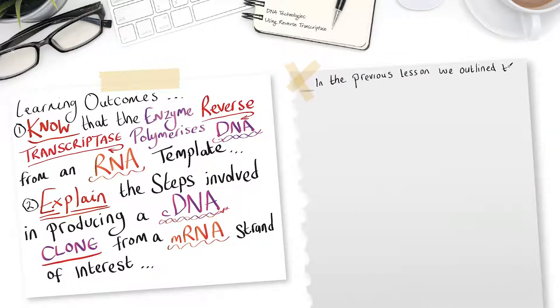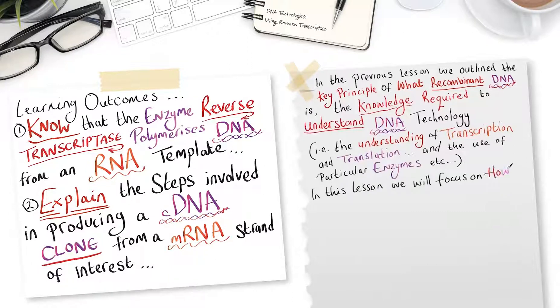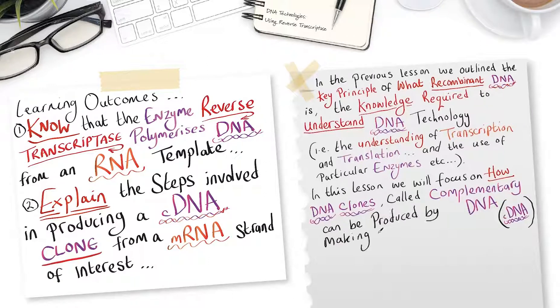In the previous lesson, we outlined the key principle of what recombinant DNA is, the knowledge required to understand DNA technology - understanding transcription, translation, and the use of particular enzymes. In this lesson, we will focus on how DNA clones, called complementary DNA or cDNA, can be produced by making use of the enzyme reverse transcriptase.